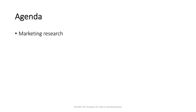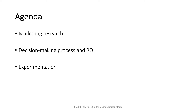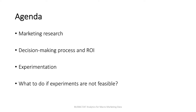In this lecture, I'm going to briefly review what is marketing research, and how marketing research supports a firm's decision-making process through ROI evaluation. The gold standard for ROI evaluation is experimentation, so I'm going to briefly introduce experimentation. However, conducting experiments is not always feasible, so I'm going to briefly talk about what to do if experiments are not feasible — and that's the goal of this course. Okay, are you ready? Then, let's get started.